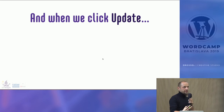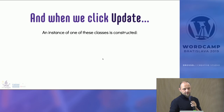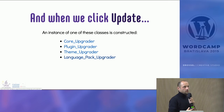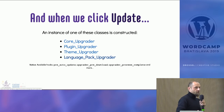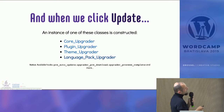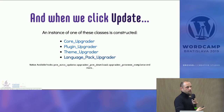What happens when we click Update? An instance of one of these upgrader classes is constructed. There are four classes WordPress uses: CoreUpgrader, PluginUpgrader, ThemeUpgrader, and LanguagePackUpgrader. All of these are well documented in the codex. The important thing is that all of these classes use the pre_auto_update filter, upgrader_pre_download, and upgrader_process_complete filters — and much more. So we can hook our code in there.